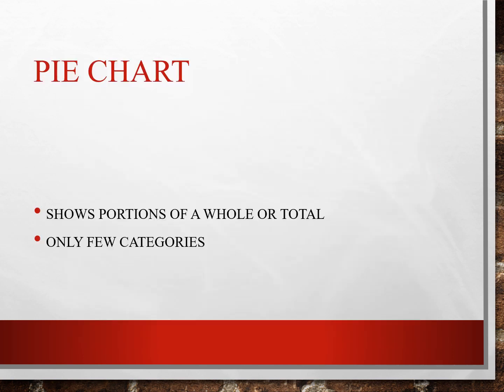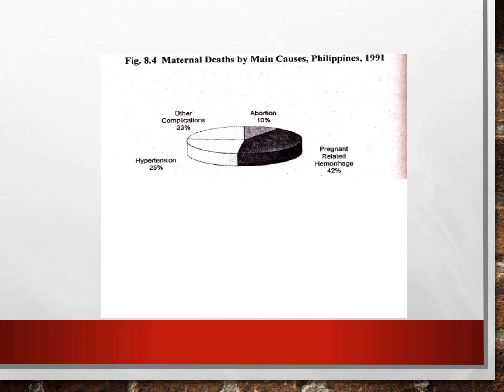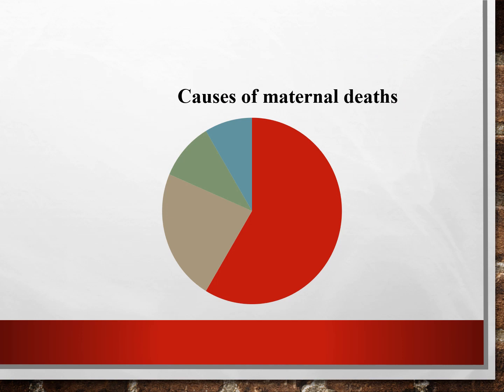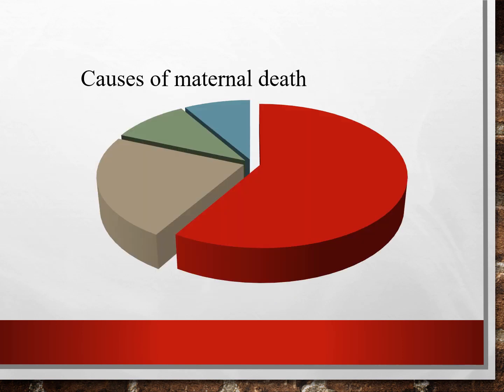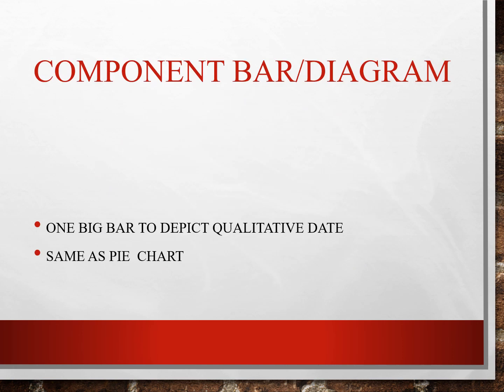Pie chart: choose portions of a whole or total. It's ideal when you only have a few categories to present. For example, this has four divisions — maternal deaths by main causes. What's wrong with this pie chart? Component bar diagram uses one big bar to depict qualitative data, same as your pie chart.